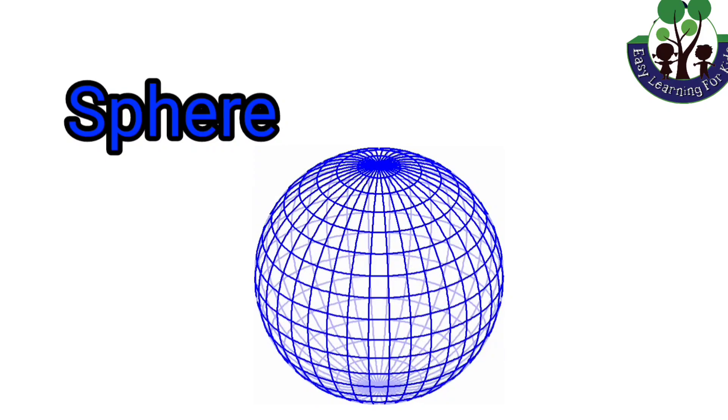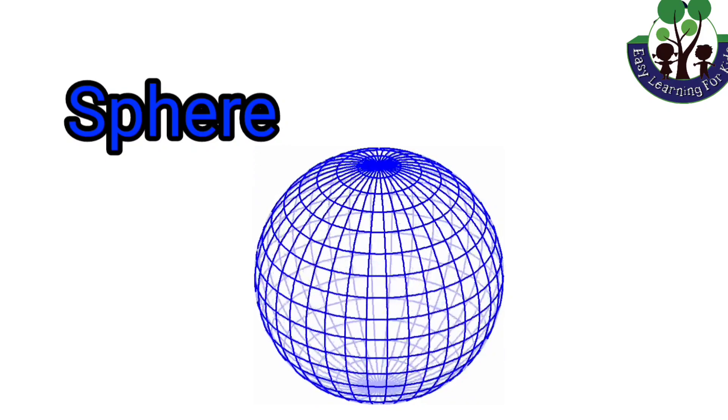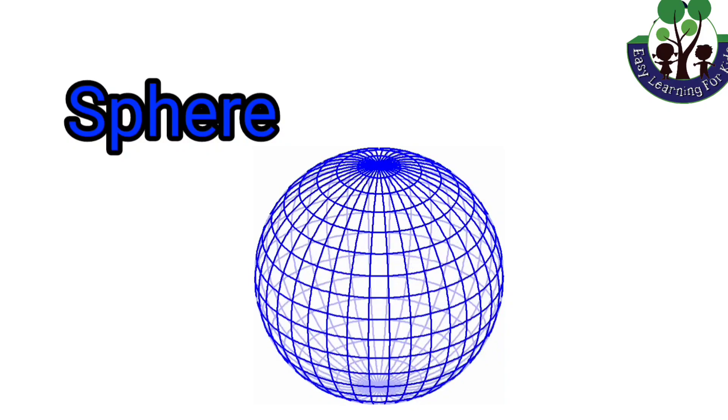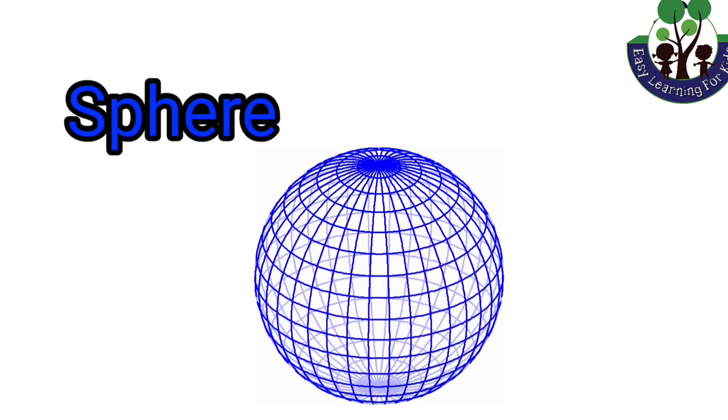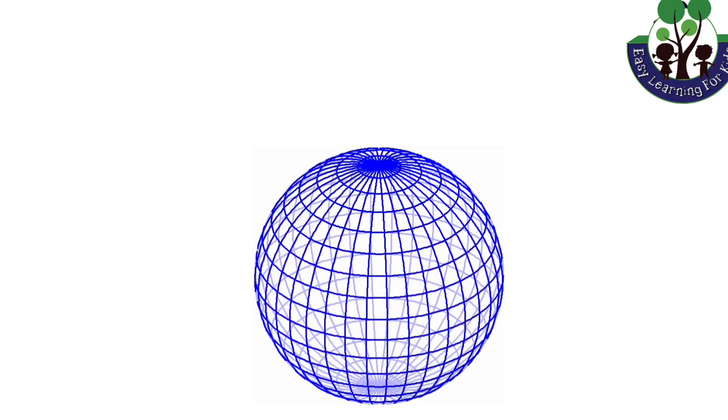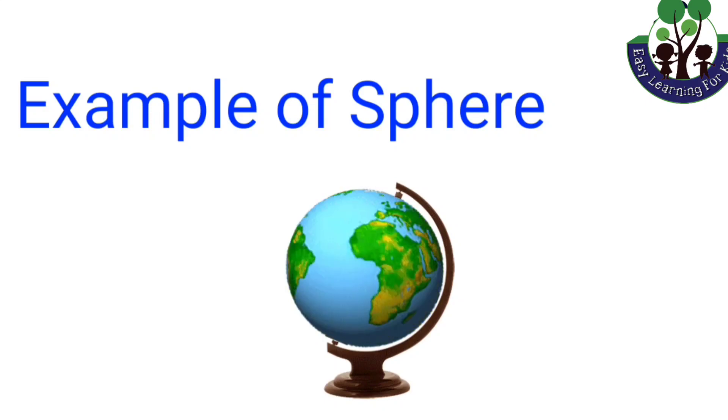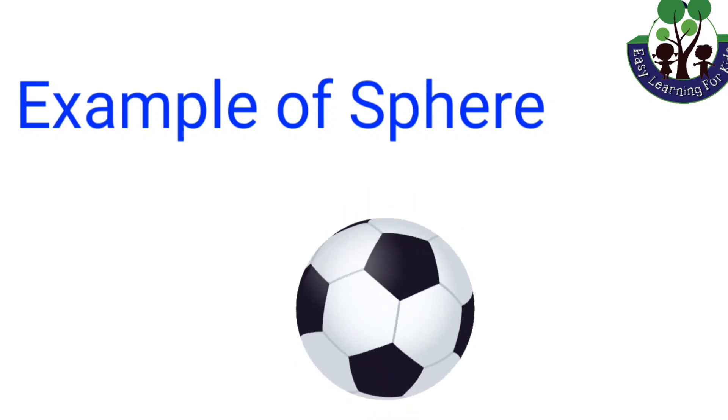Sphere. A sphere is a solid shape. It's similar to a ball. It is a closed three-dimensional shape formed using a circular base. For example, globe and football.